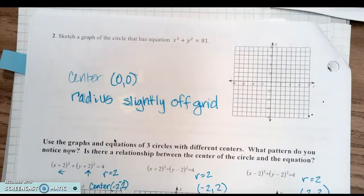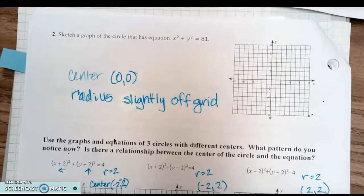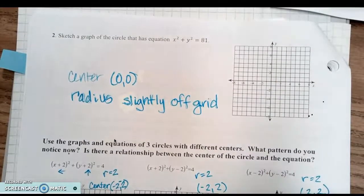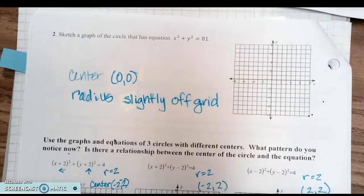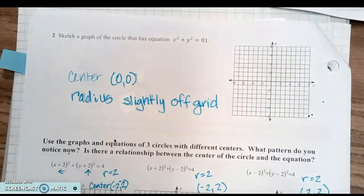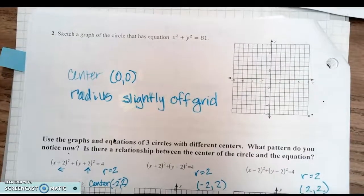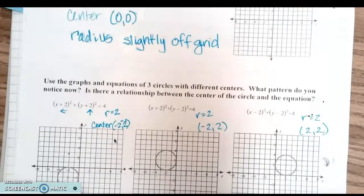You could rescale your axes, but the numbers are already written in, so the circle is meant to go slightly off the grid. Any questions on problem number two? To make your circle smooth, go around two or three times and then come back with your eraser to clean it up.